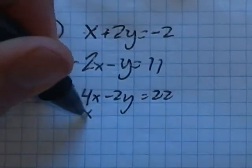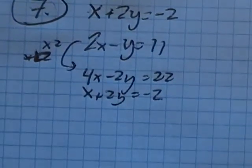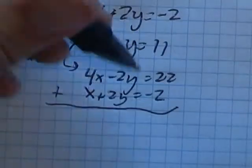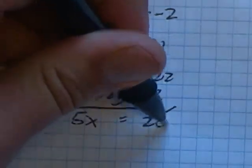And then this one I'm not gonna change at all: x plus 2y equals negative 2. So now I'm gonna add them together, and notice I get 5x, two y's cancel, 22 minus 2 is 20.